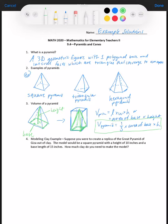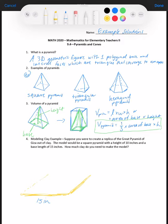Let's use this as an example. Modeling clay: suppose you were able to create a replica of the Great Pyramid of Giza out of clay. The model would be a square pyramid with a height of 10 inches and a base length of 15 inches. How much clay do you need to make the model? I'll label the base edge as 15 inches and draw the height from the center of the base up to the apex, which is 10 inches.